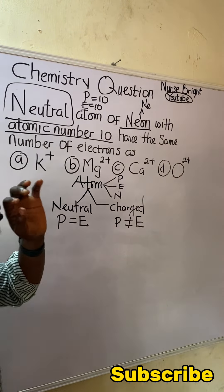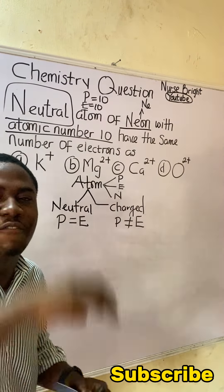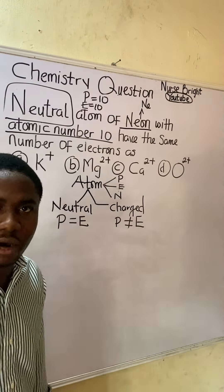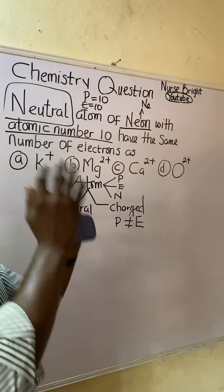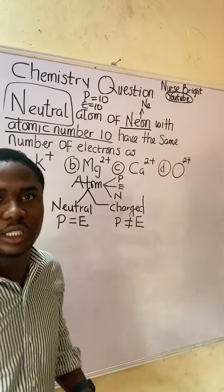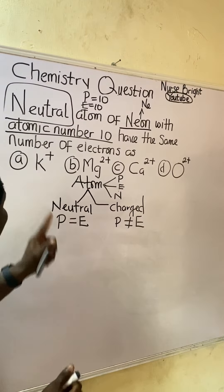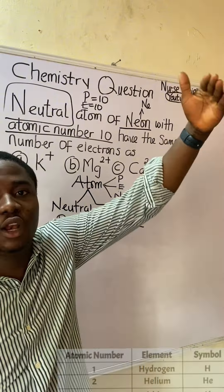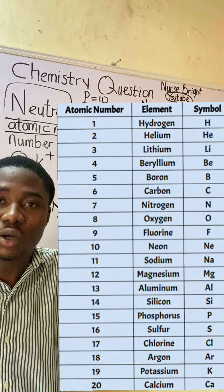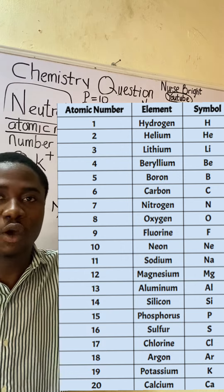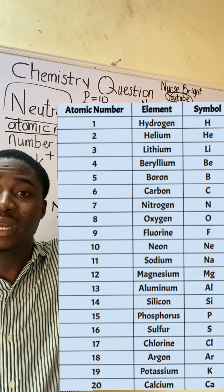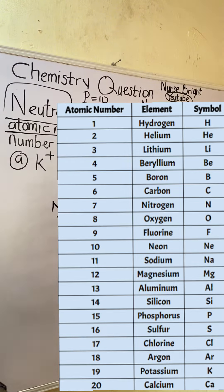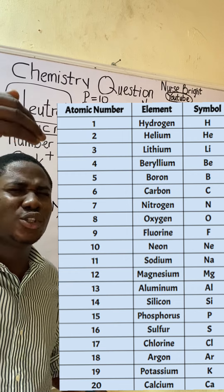To do that, we need to remember the periodic table — the first 20 elements and their atomic numbers. The elements in order are: hydrogen, helium, lithium, beryllium, boron, carbon, nitrogen, oxygen, fluorine, neon, sodium, magnesium, aluminium, silicon, phosphorus, sulfur, chlorine, argon, potassium, and calcium.